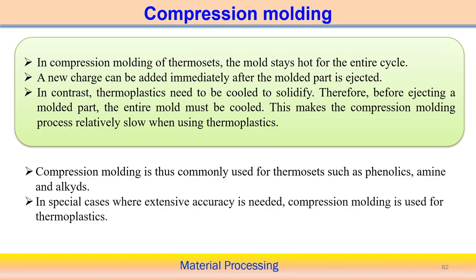In contrast, when thermoplastic polymers are used in compression molding, once one component is produced, the mold must be cooled before loading the next charge. This cooling between components makes compression molding a much slower process for thermoplastics. This is a disadvantage for thermoplastic polymers in compression molding, whereas for thermosets it is a faster process.